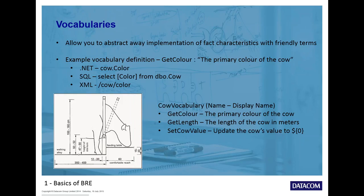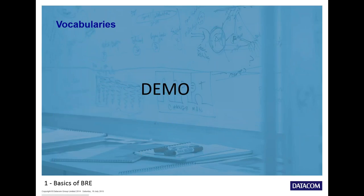There are two names used with any vocabulary definition: the name and the display name. The name is a short quick reference — for example, 'get color' as a name, and the display name would be 'the primary color of the cow.' When dealing with a vocabulary definition that takes parameters in, like a .NET method with parameters, the display name could be 'update cow's value to {parameter}.' You can insert whatever values you want into the parameter at the point of creating the rule.